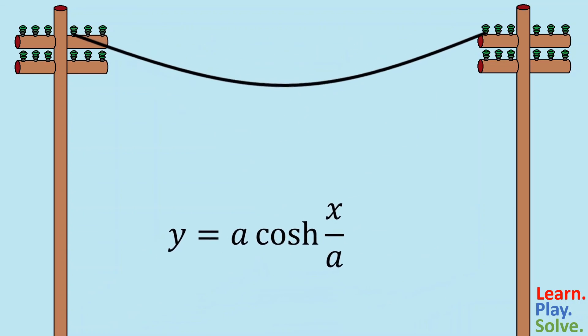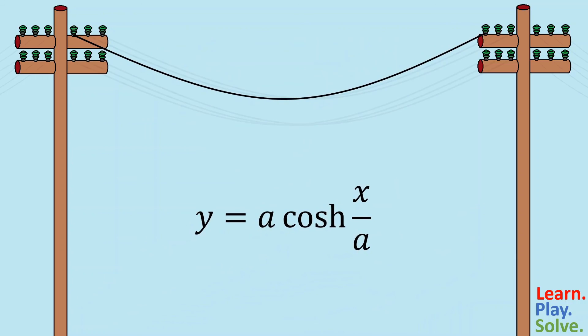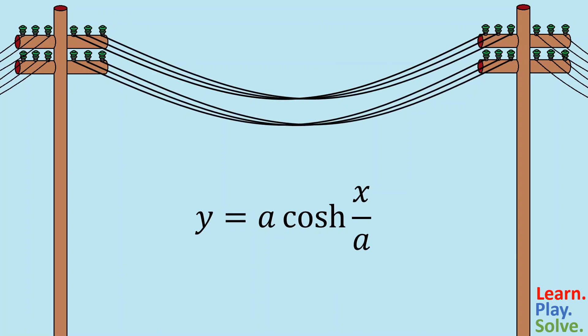So there you have it — the equation of a catenary. Now the next time you pass a hanging power line, you can say to your friend: hey, look at that y equals a times the hyperbolic cosine of x over a. It looks like its a value is dangerously approaching zero. I hope no one gets electrocuted.